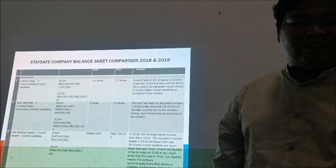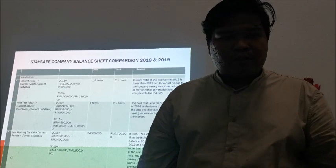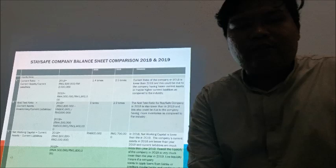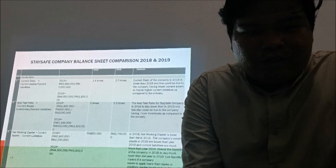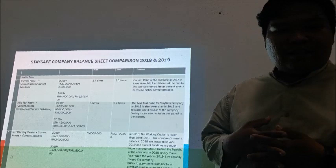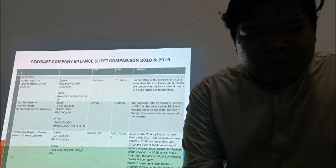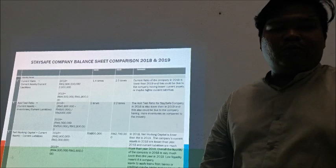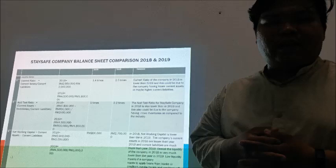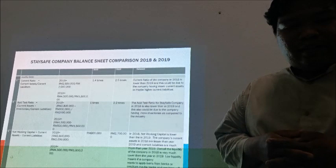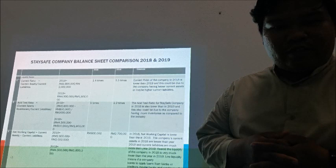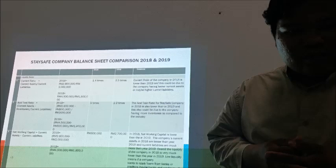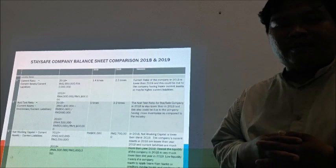Now for our calculations for Steady Safe Company. We got a current ratio of 1.5 times in 2018 and 2.5 times in 2019. We can see that the current ratio of the company in 2018 is lower than 2019, which could be due to the company having lesser current assets or higher current liabilities. For the acid test ratio, in 2018 we got 1 time and in 2019 we got 2.2 times. This could be due to the company having more inventories compared to 2019.